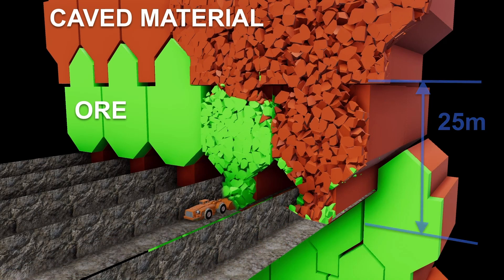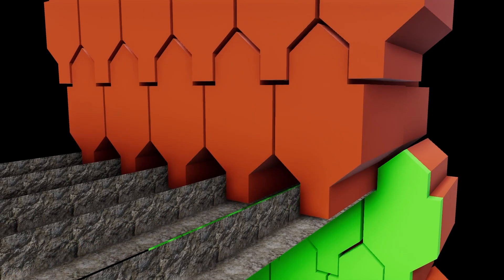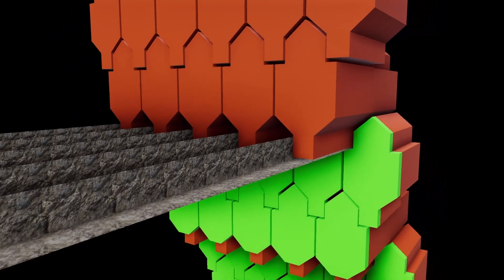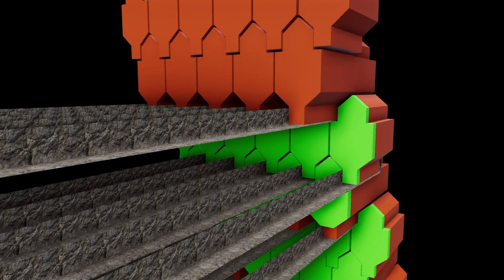Using semi-autonomous loaders, each draw point is loaded after blasting. Caved material gradually feeds down, eventually entering the draw point. Ore is loaded until the grade of ore reaches a predetermined cut-off.